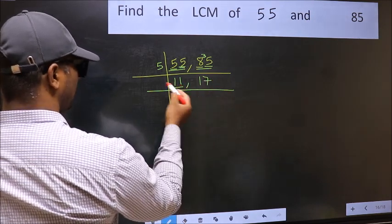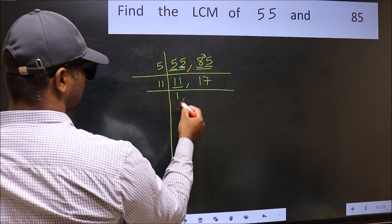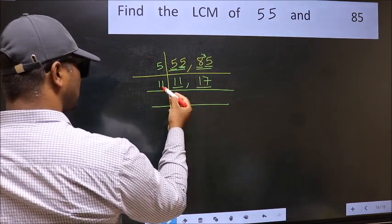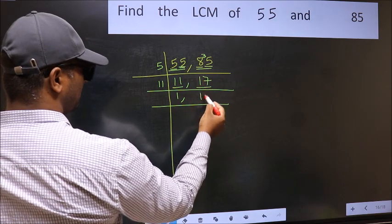Now here we have 11. 11 is a prime number, so 11 once 11. The other number 17, not divisible by 11, so you write it down as it is.